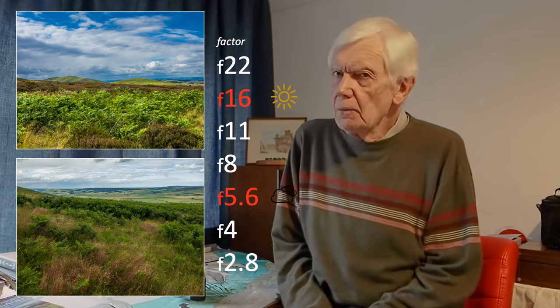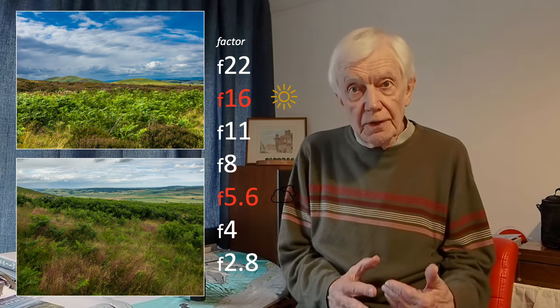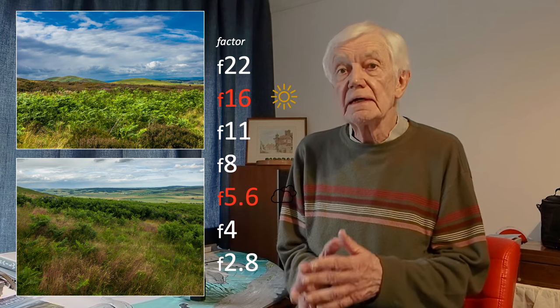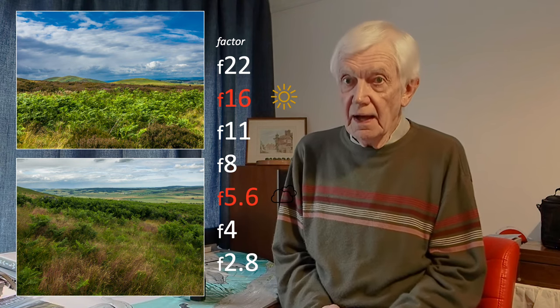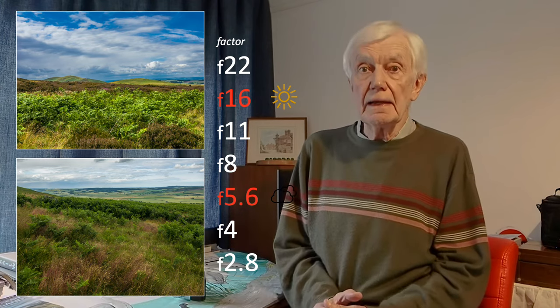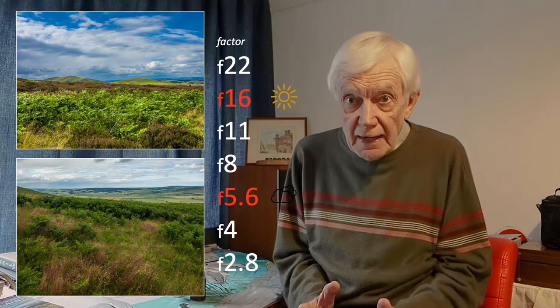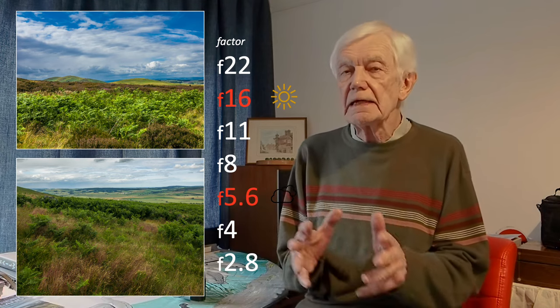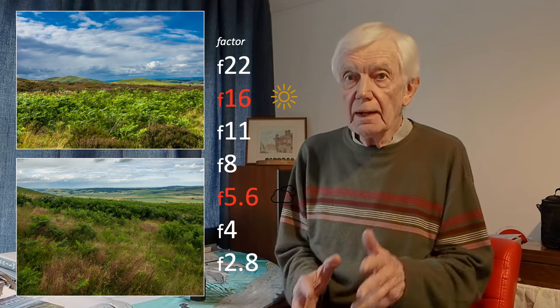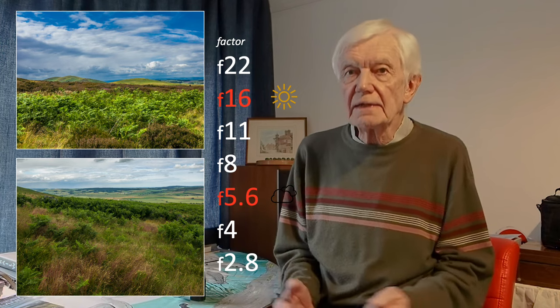So why should we worry? Well, we have seen in the previous programme that there are times when we need to take greater control of shutter speeds for controlling movement, and apertures for depth of field. These are matters I'm going to discuss in more detail in later programmes. For now, get your mind around how shutter speeds and apertures work — doubling and halving light to get a correct exposure.